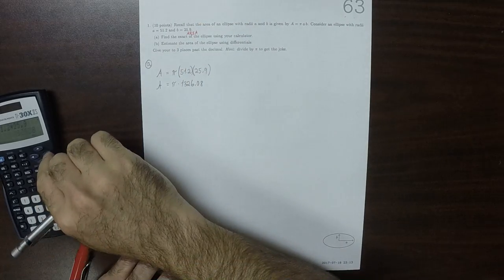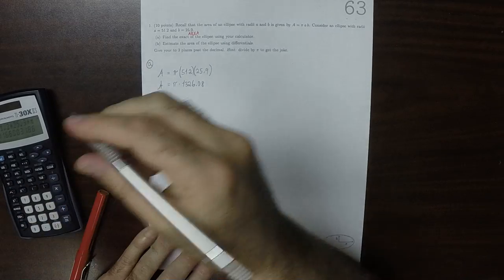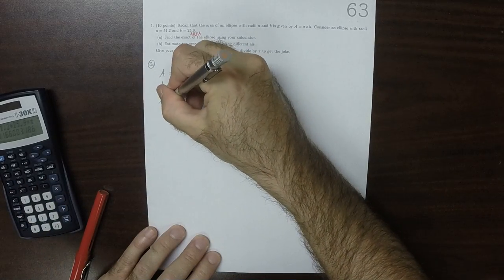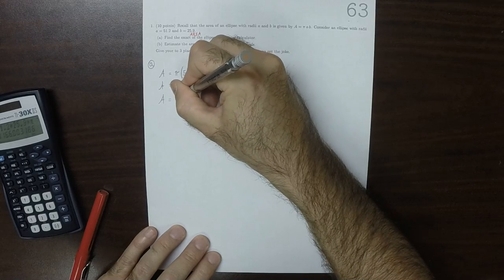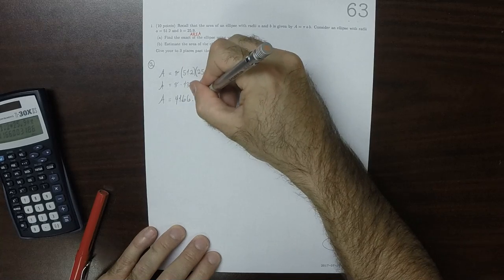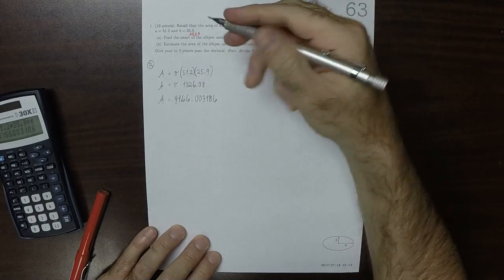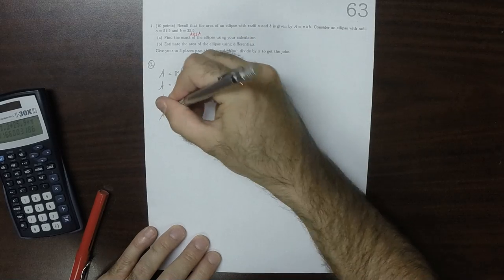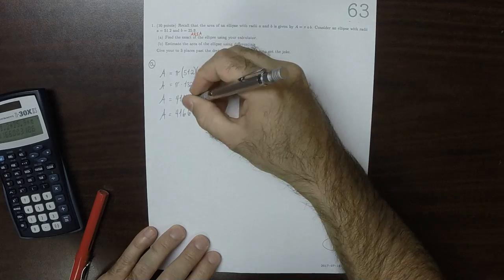And if you multiply by π, that gives you 4166.003186. To three places past the decimal, that's 4166.003.